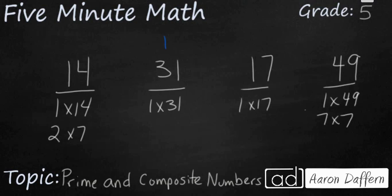After listing out the factors, you should see that thirty-one and seventeen are prime, because they only have two factors. Fourteen and forty-nine are composite, they have three or more.